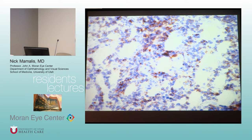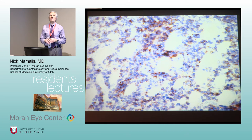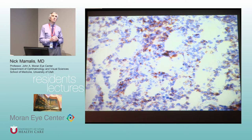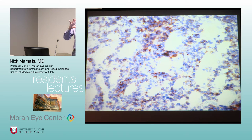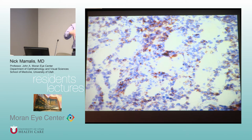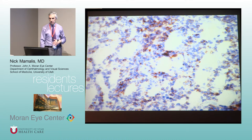There's a continuum — in between frank lymphoma and benign idiopathic orbital inflammation there's an 'atypical lymphoid infiltrate' that's not monoclonal but nearly looks like lymphoma. These are tricky; 10 years later many do progress to lymphoma. Fred Jakobiec in New York followed patients with pure orbital lymphoma: at 5 years about 25% developed systemic lymphoma, at 10 years about 50%, and by 15 years almost 75%. You really have to keep a close eye on these patients.